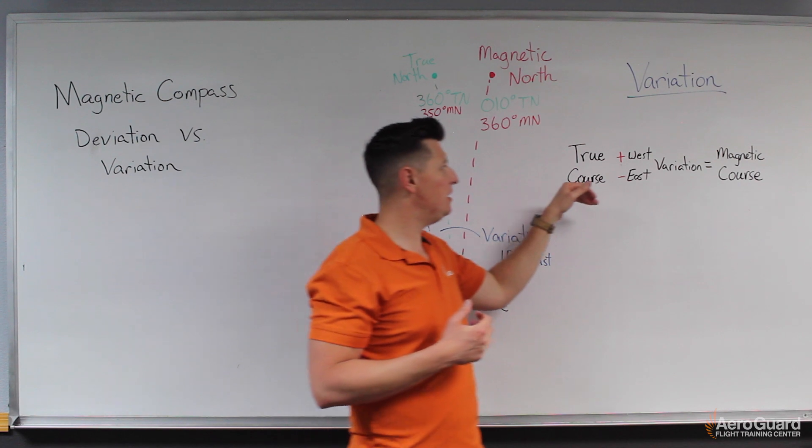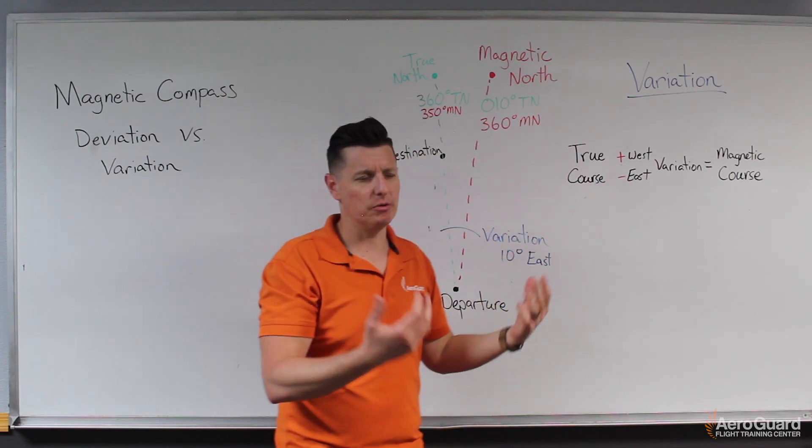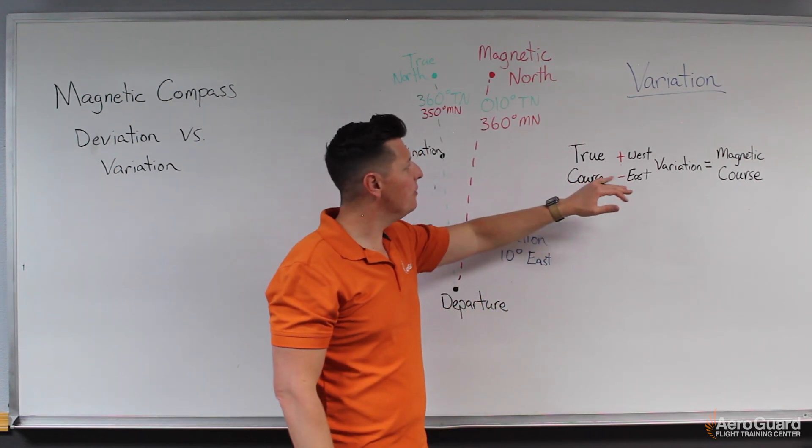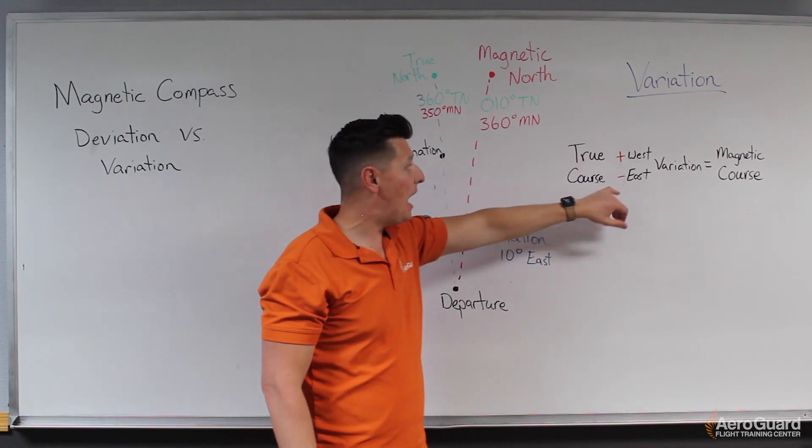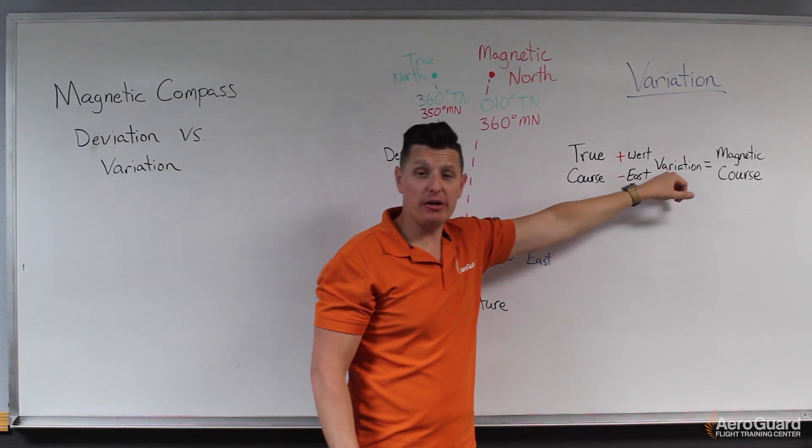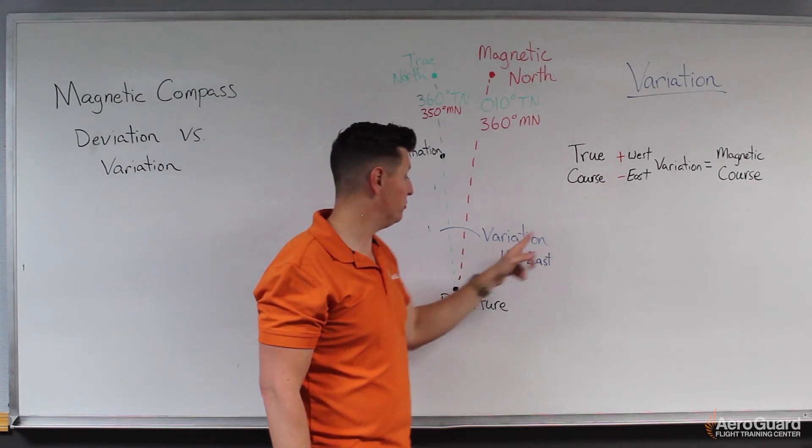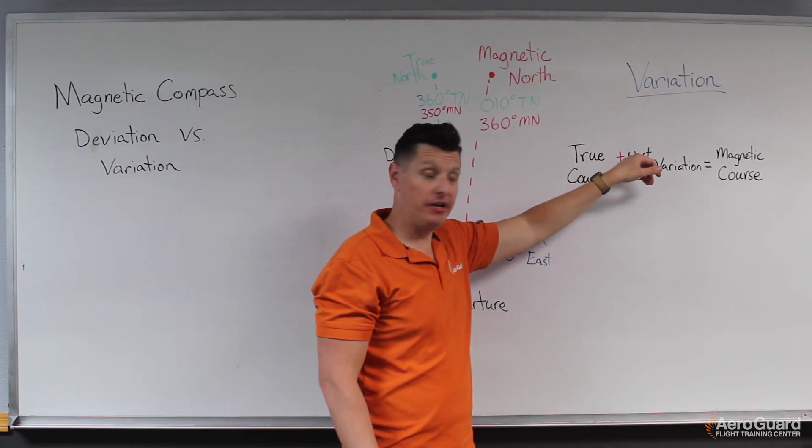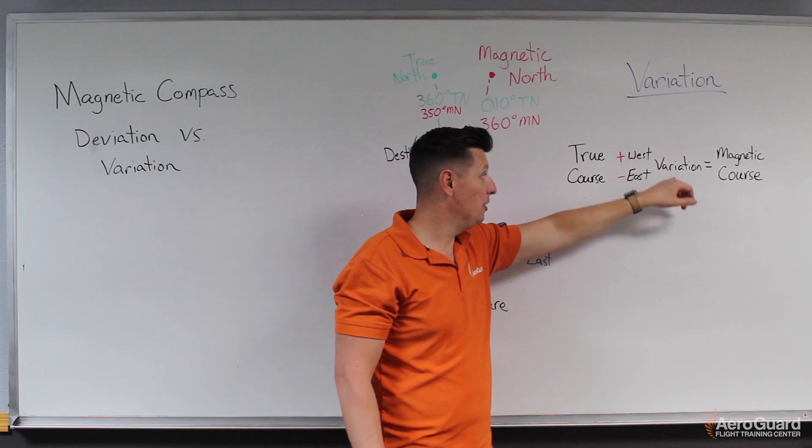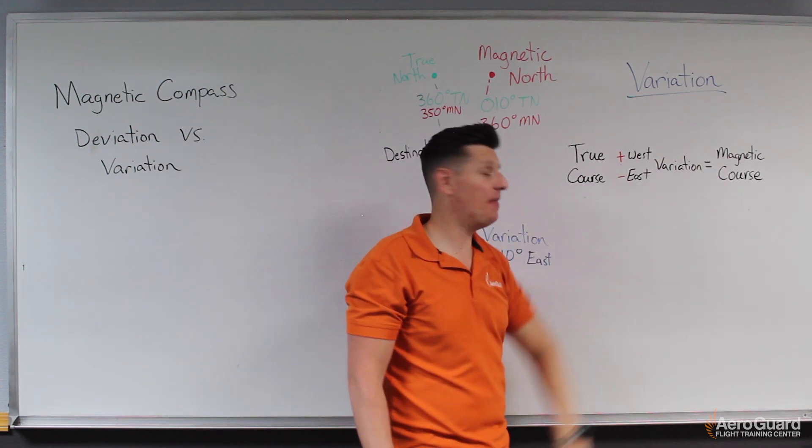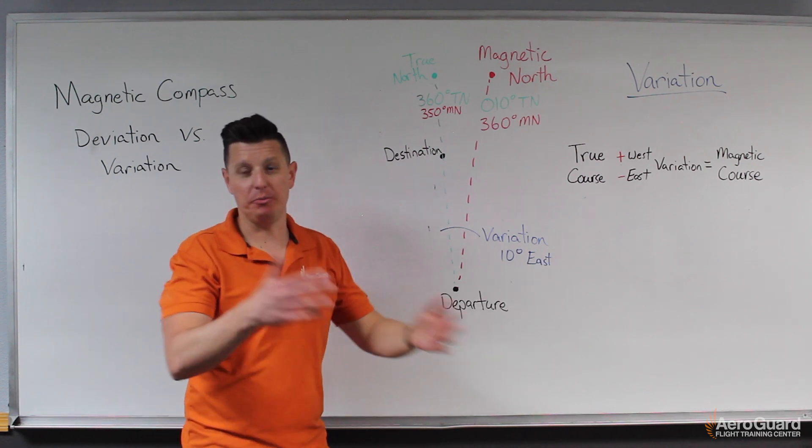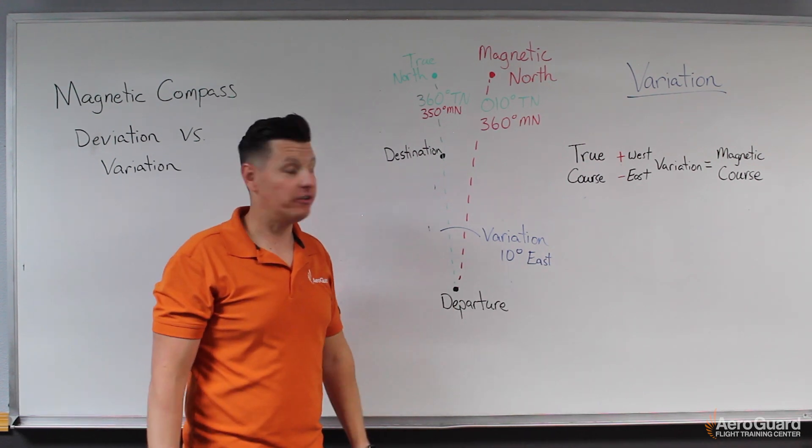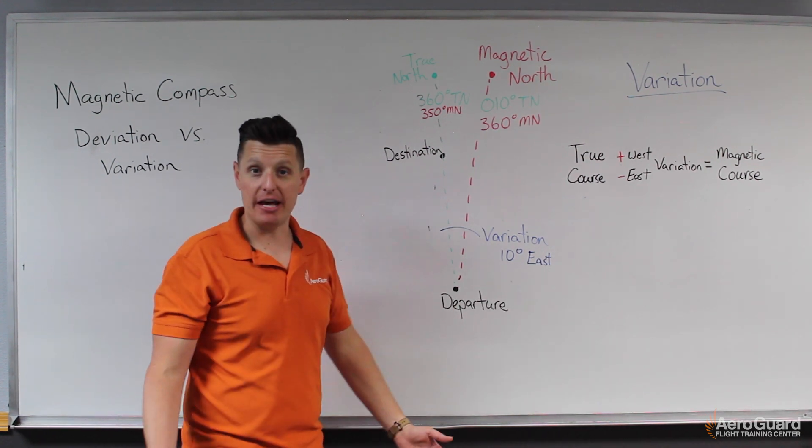So something that we commonly see on flight planning forms or something to that effect is an equation. So it says start with your true course, and if you have east variation, you'll subtract those degrees. If you have west variation, you'll add those degrees, and then that's how we would get our magnetic course, which is ultimately what we want to point the compass at to get to that destination.